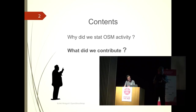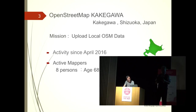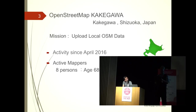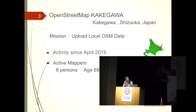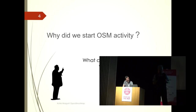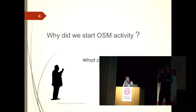I'd like to cover two points: first, why did we start OSM activity, and then I'll explain our contribution. Our hometown is Kakegawa, located in the middle of Japan. Our activity started in April last year. Our mission is to enrich local OSM data as much as possible. The average age is around 70 — not so old, but a veteran group. Why did we start OSM activity? What can a senior team do? That was the question.